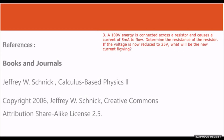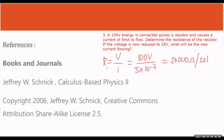Sample problem number three: A 100-volt source is connected across a resistor and causes a current of 5 milliamperes to flow. First, determine the resistance of the resistor. Using R = V/I: R = 100 volts / (5 × 10⁻³ amperes). Solving gives R = 20,000 ohms, or 20 kilohms.